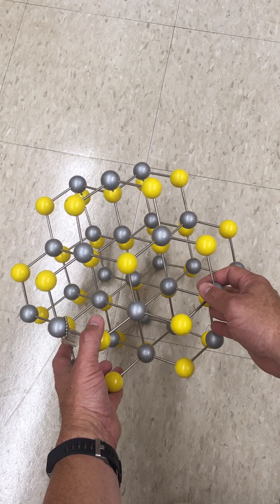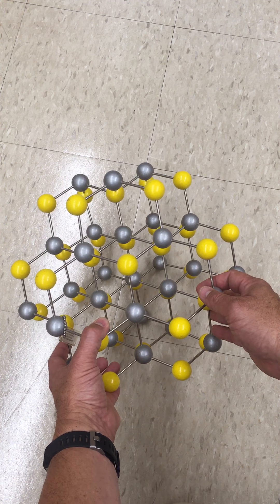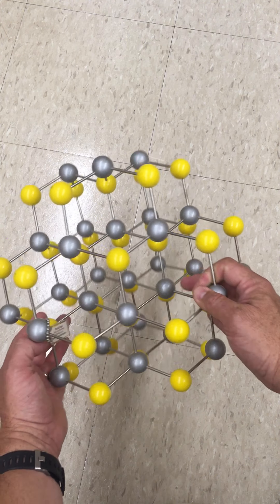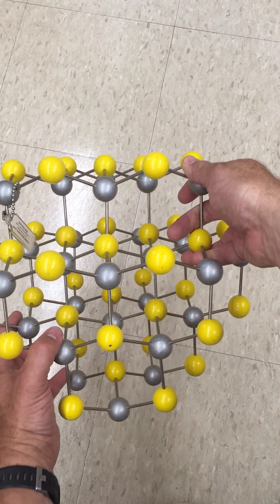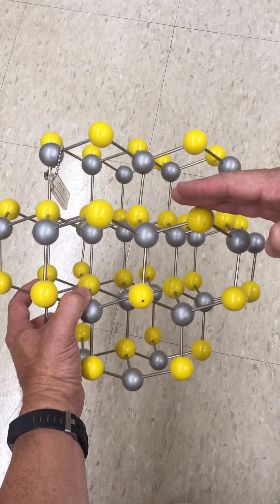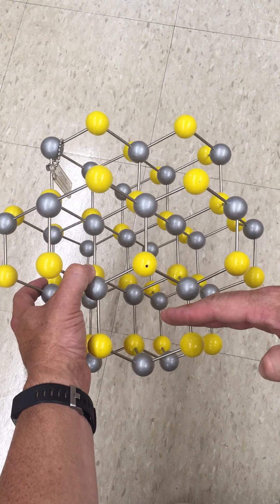By cubic structure I'm referring to the layers in this structure. If I tip it like this, you can kind of see that there's alternating sulfide layers and zinc layers throughout the structure.